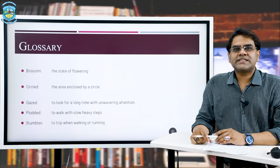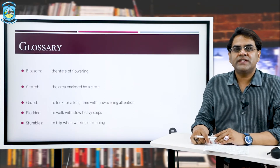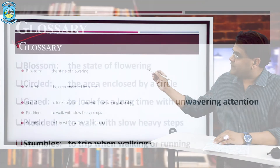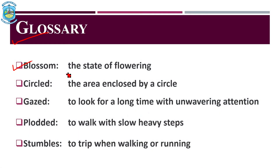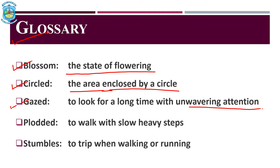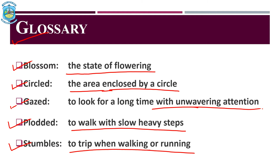In this part of the slide, we are looking at the glossary very carefully. The first word, 'blossom,' means the state of flowering. The second word, 'circled,' means the area enclosed by a circle. Third, 'gazed,' means to look for a long time with unwavering attention. And then we have the word 'stumbles,' which means to trip when walking or running.